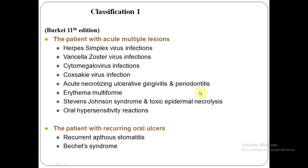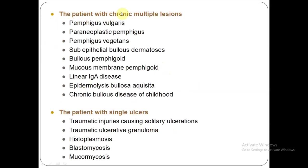So let's go to the classification of ulcers. According to the 11th edition of Burkitt's, we can classify ulcers into four categories: the patient with acute multiple lesions, the patient with recurring oral ulcers, the patient with chronic multiple lesions, and the patient with single ulcers.